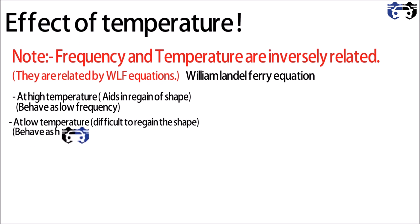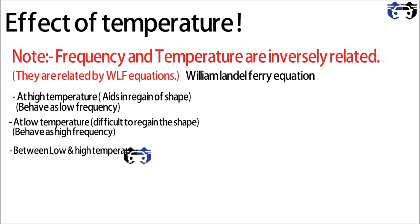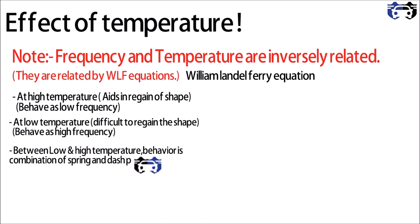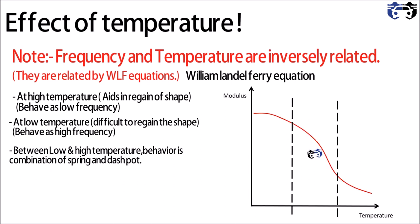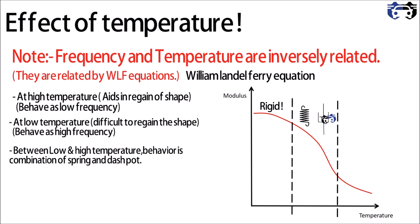At moderate temperature the molecules behave as a combination of spring and dashpot, and this is where tires are generally operated. As you can see in this modulus versus temperature curve, at lower temperature the modulus is highest and the tire behaves as rigid. At moderate temperature the modulus is moderate and the tire behaves as a spring and dashpot combination. At higher temperature the tire material behaves as a spring with the least modulus.